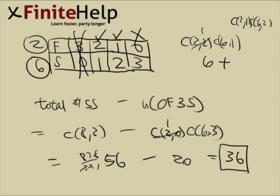And then six choose two is 15 times two, that's 30. And this still comes out to 36. And that's your final answer.